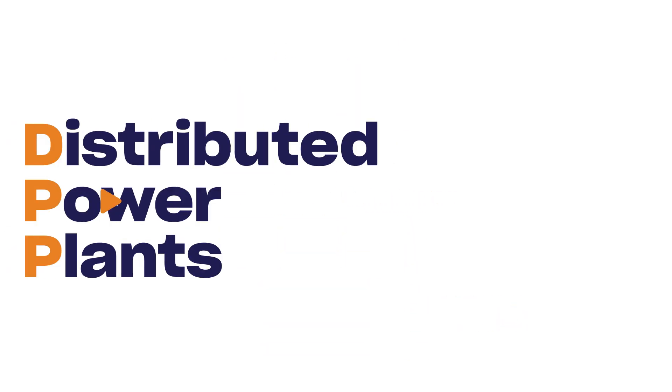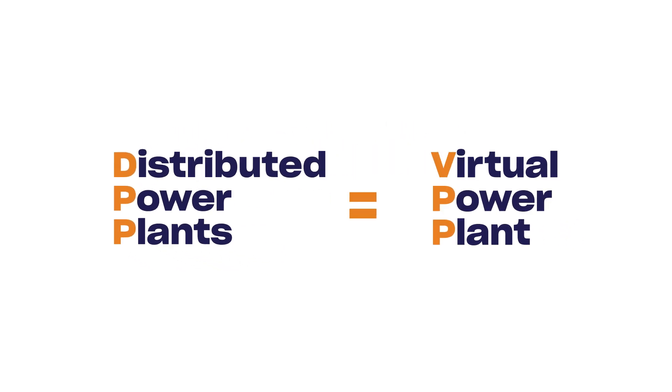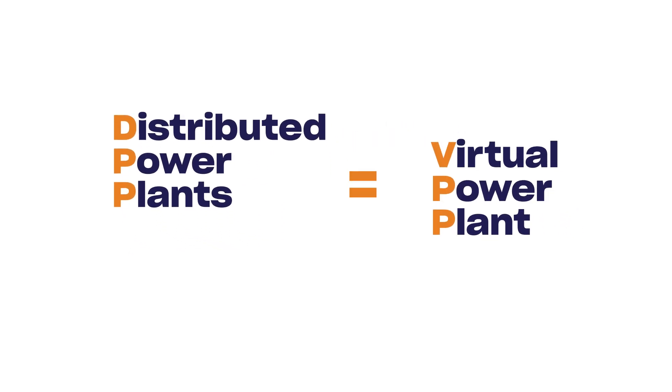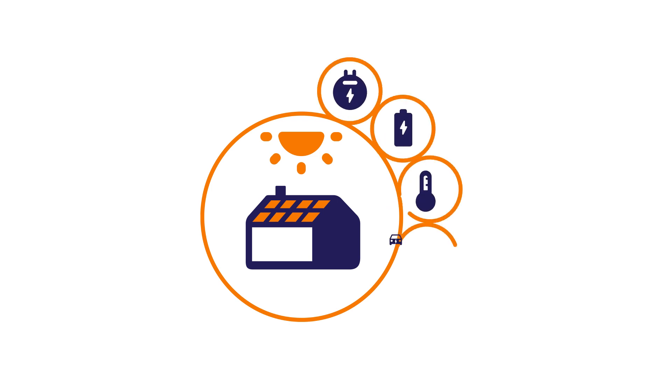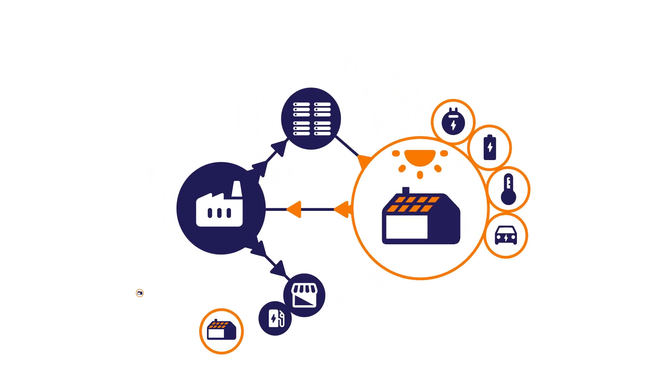Distributed power plants are the answer. A distributed power plant, also known as a virtual power plant, is like crowd-sourced energy. It takes solar batteries, smart appliances, and other energy resources in people's homes and creates an on-demand community power network.